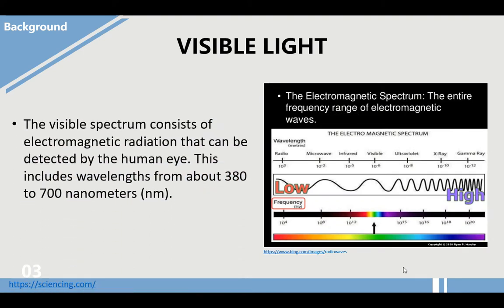The visible spectrum consists of electromagnetic radiation that can be detected by the human eye. This includes wavelengths from about 380 to 700 nanometers. As you can see in the electromagnetic spectrum chart, the visible light is located in this area.